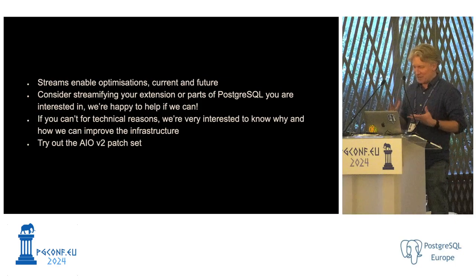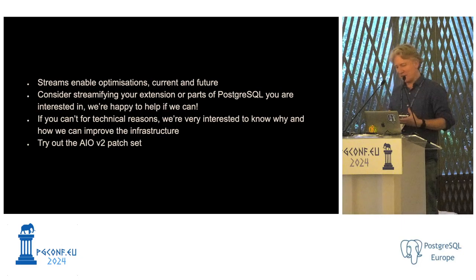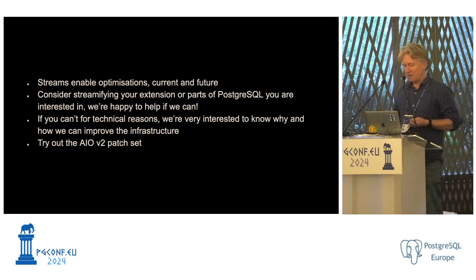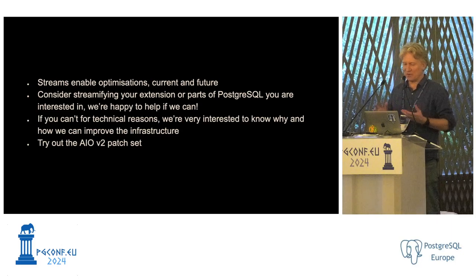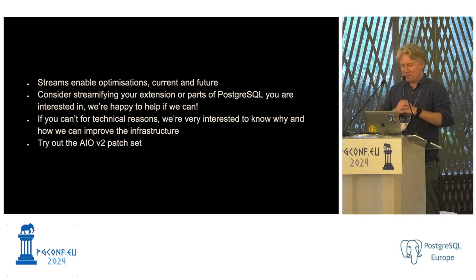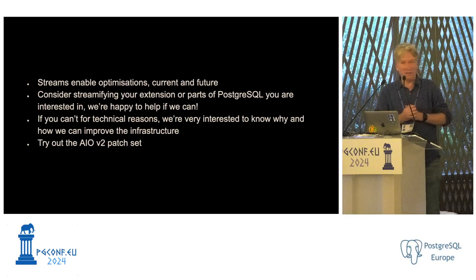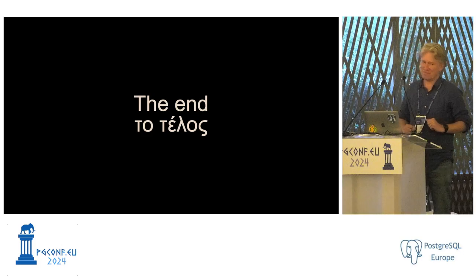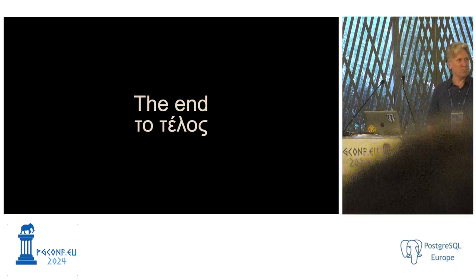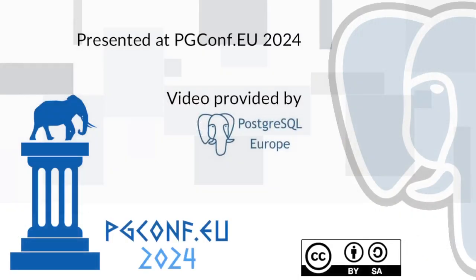The main takeaway from this talk: the streaming abstraction enables a whole bunch of optimizations already now, and we can see many potential future improvements. If you work on an extension or on core Postgres and you can see parts that could benefit from streamification, we're happy to help or give feedback. We'd especially be interested to hear from people who try to do that and find that they can't, for some reason — because the abstraction isn't good enough or there's something obvious it needs. You can try all this stuff out and please do.